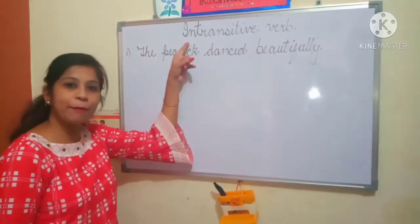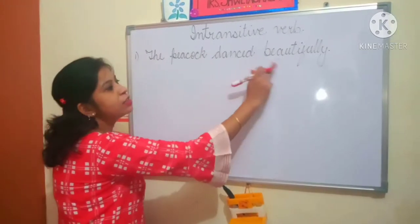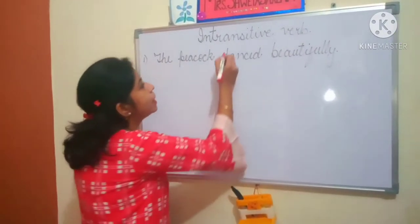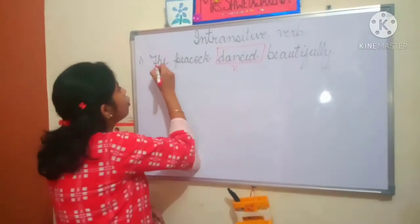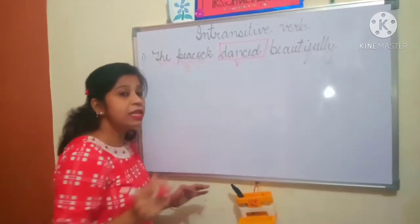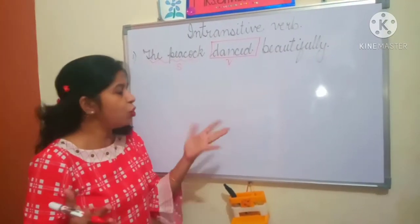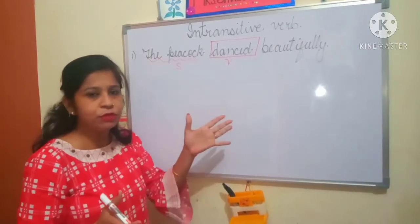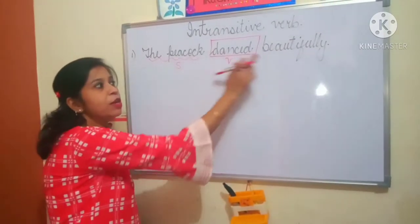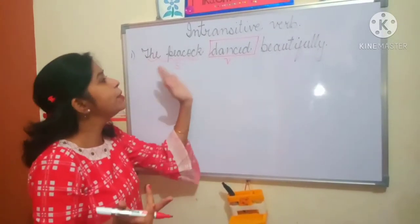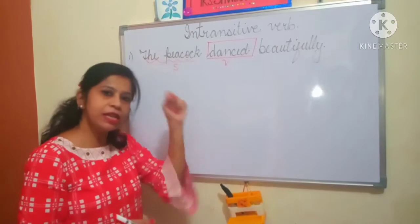Now students we will study the examples of intransitive verb. Look at the given example: the peacock danced beautifully. The verb is danced. Is there any subject? Yes — peacock is the subject. But is there any object in the sentence? Beautifully — is beautifully a place or object? No, beautifully is an adverb here. So a verb which has a subject but no object — object toh hume mila nahi is sentence mein — is the example of intransitive verb.